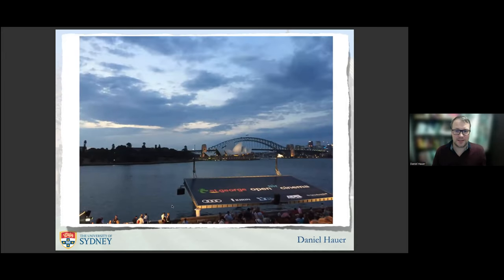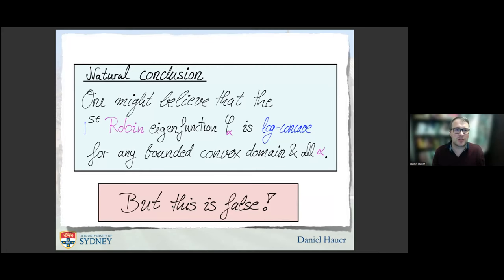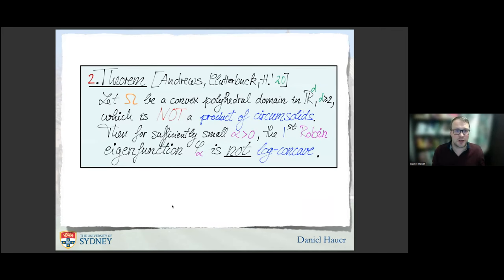But you see the sky becomes dark and it's actually false. To tell you the truth, we were actually working the first year in the wrong direction. We were believing it is true until we arrived to a contradiction in our proof that this cannot be true. So we had to attack the whole problem from a different side. And that's the result which we got. When omega is a convex polyhedral domain which is not a product of circumsolids—I will explain what this means shortly—then for sufficiently small alpha, the first Robin eigenfunction of the Laplacian with Robin boundary condition is not log-concave.